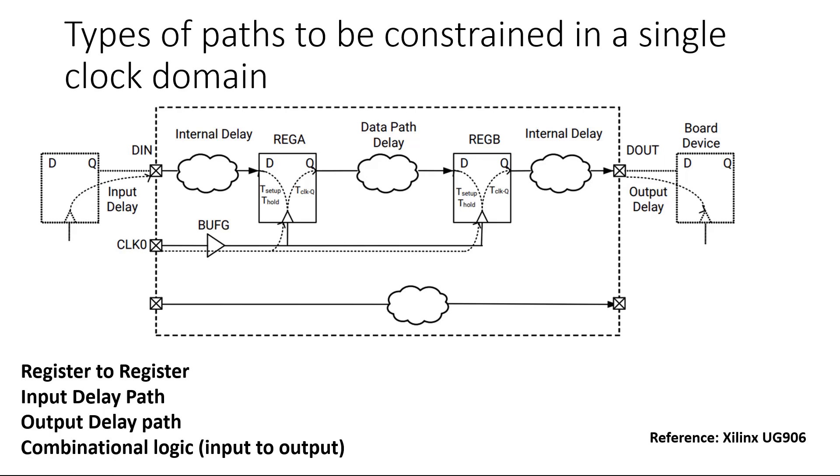Now let us discuss the second type of path: input delay path. Here in the picture, D in is an input to our chip and through some combinational logic it is saved on one of the flip-flops named as reg1, but the other flip-flop which is giving its output is residing outside the chip.